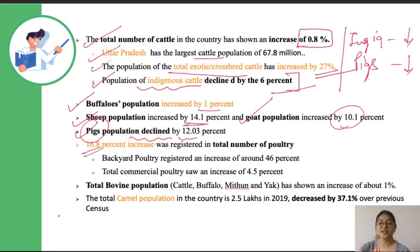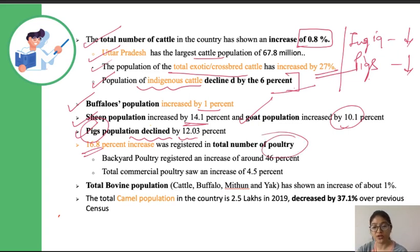A 16.8 percent increment was registered in the total poultry population. Backyard poultry showed a 46 percent rise, and total commercial poultry showed an increment of 4.1 percent.